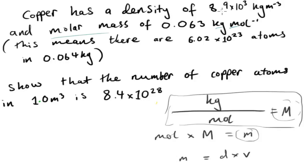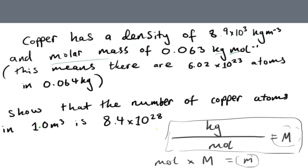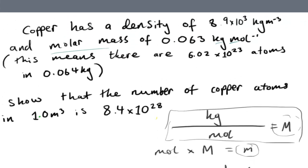What we need to do here is, it says show that the number, it wants us to figure out the number of copper atoms in one meter cubed. And so that means that V is one, so V is one meter cubed. That basically means that m is just going to be this 8.9 times 10 to the 3.